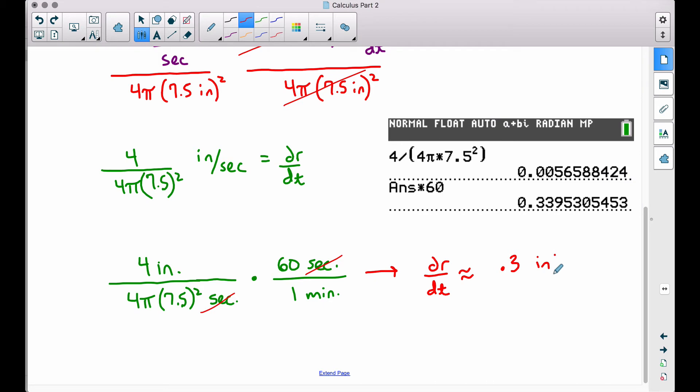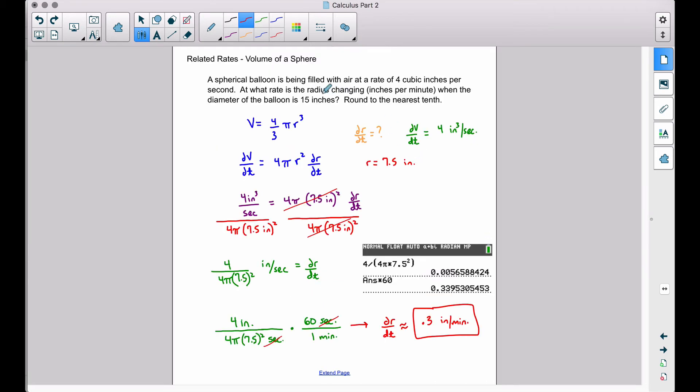Those are the only words that we have left in this problem. Therefore, if air is filling up a balloon, a spherical balloon, at a rate of 4 cubic inches per minute, when the diameter of the balloon is 15 inches across, the radius is changing at a rate of 0.3 inches per minute. And that's exactly what we want to answer here, and we did round to the nearest tenth.